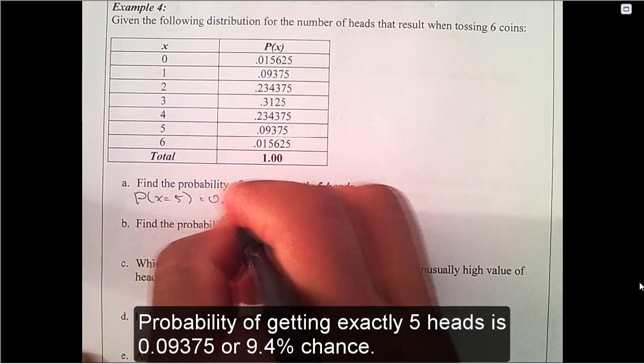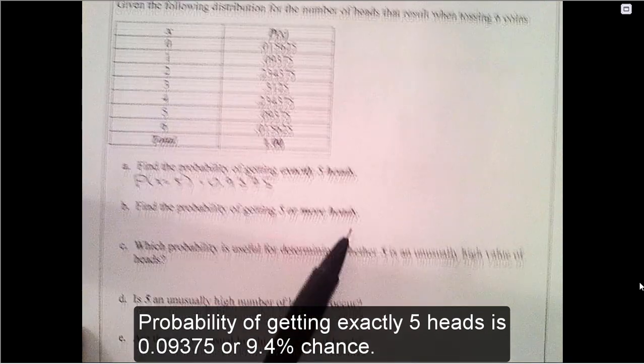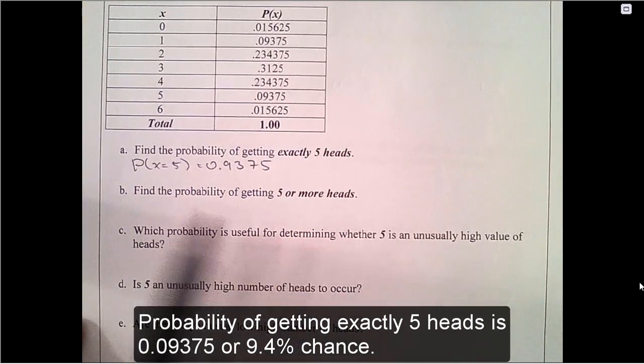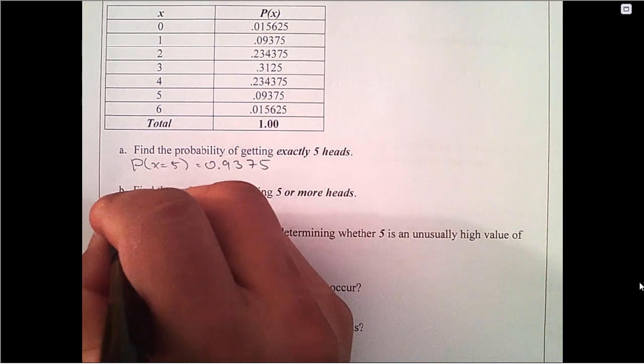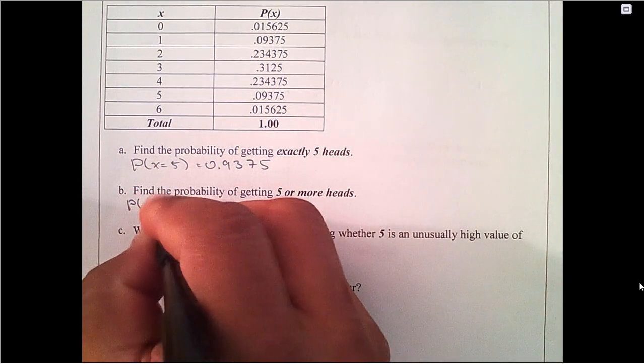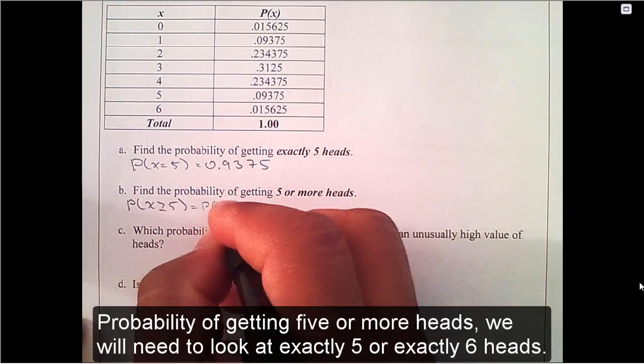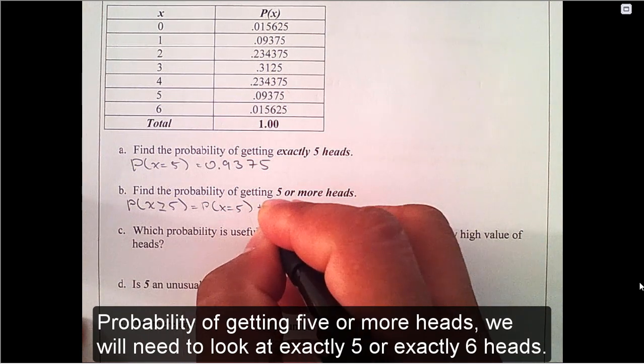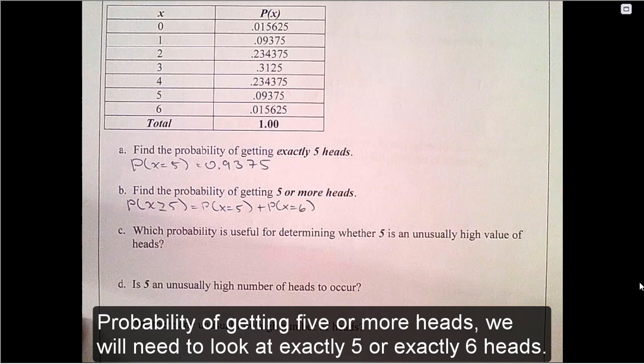The probability of getting exactly 5 heads is 0.09375 or 9.4% chance. The probability of getting 5 or more heads, we will need to look at exactly 5 heads or exactly 6 heads.